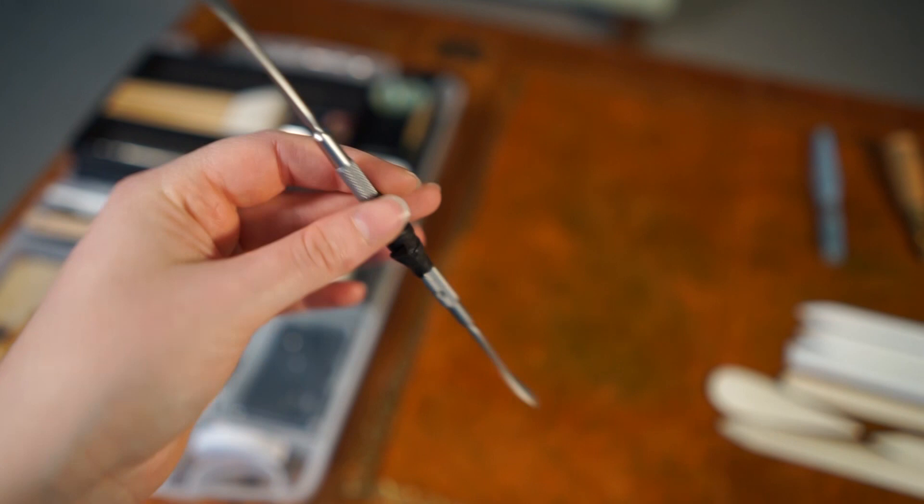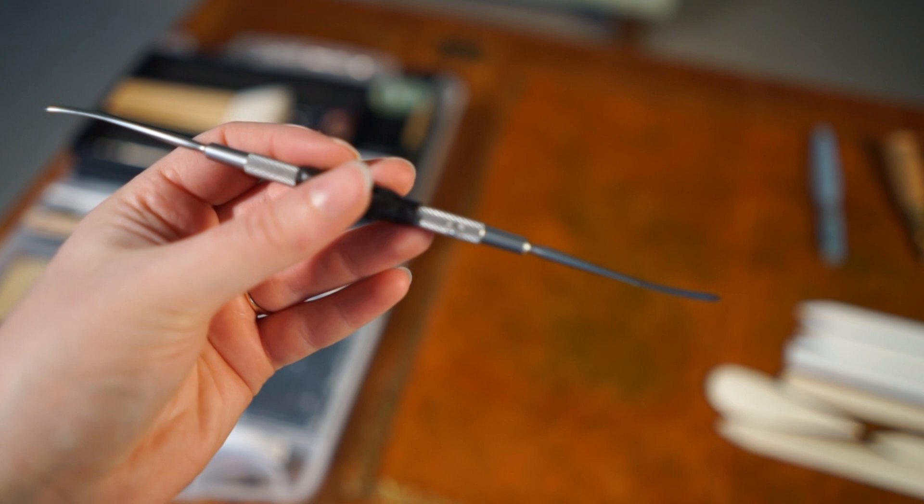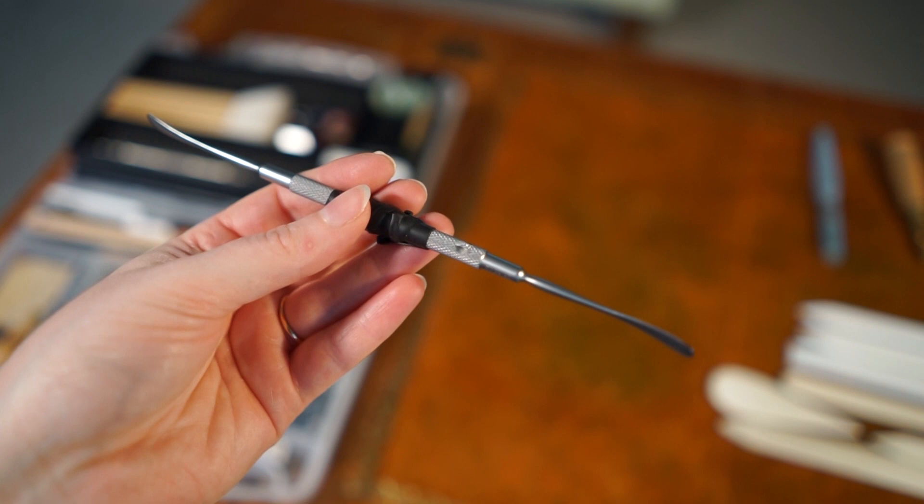This is a Hollenbach Carver which is typically used by a dentist. And finally, for my stainless steel tools, this is probably one of my favorites. It is called a septum elevator and it is typically used for nose surgery. So a pretty good example of how conservators use really weird and wacky tools from other industries. I can guarantee you this has never seen the inside of a nose.